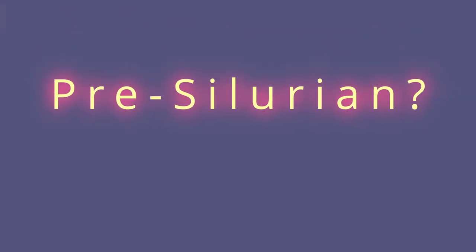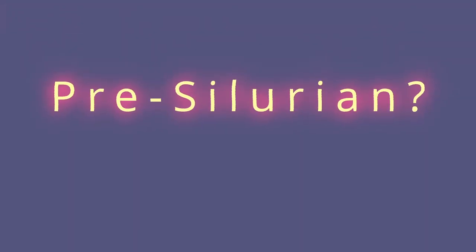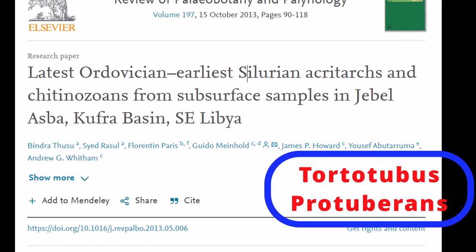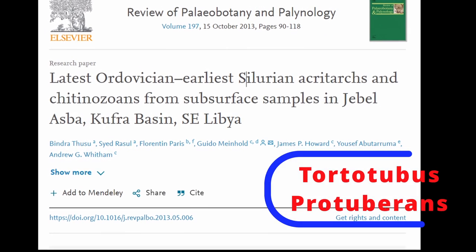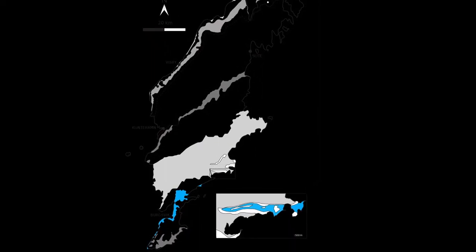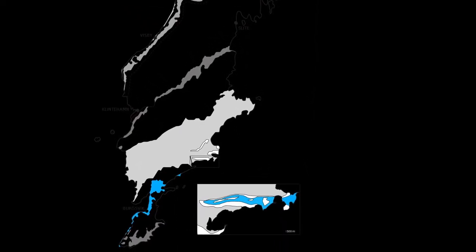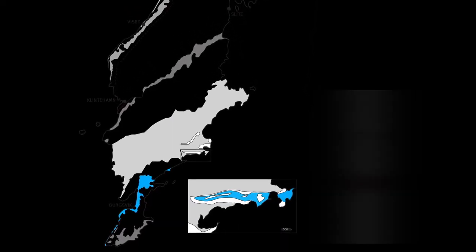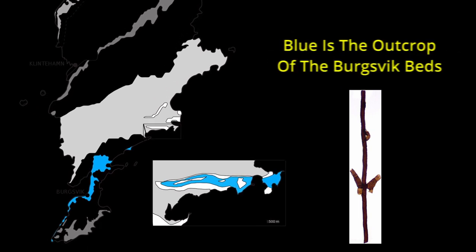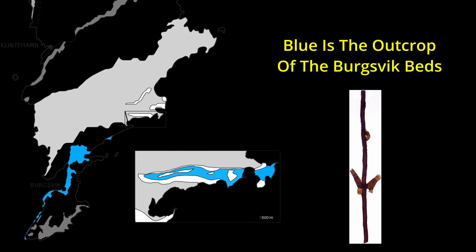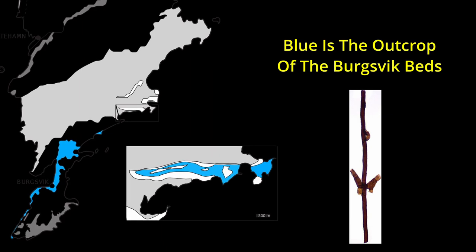Now to consider fungi: most alleged pre-Silurian evidence for fungi are controversial, though there is a somewhat more accepted late Ordovician specimen of Tortotubus protuberans. The Silurian sees far more evidence of fungi on land in the fossil record, such as the spores and filaments from the late Silurian in sandstone of the Bergsvik beds in Gotland, Sweden.